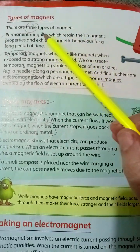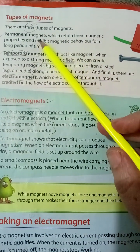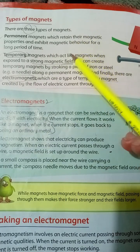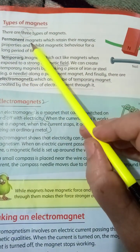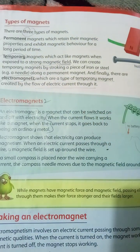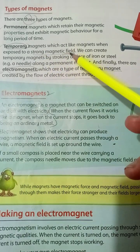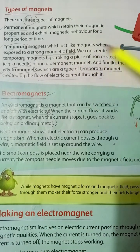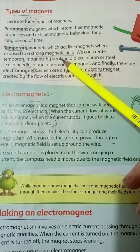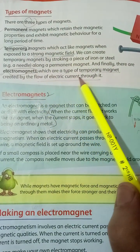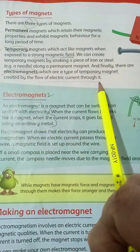You have to remember that there are 3 types of magnets. First, permanent magnets, which retain their magnetic properties — underline this. Second, temporary magnets, which act like magnets when exposed to a strong magnetic field — underline this.